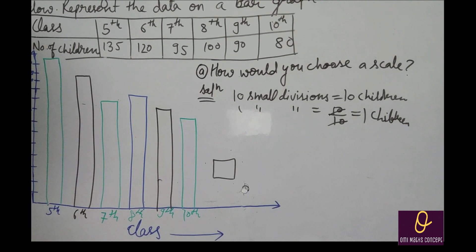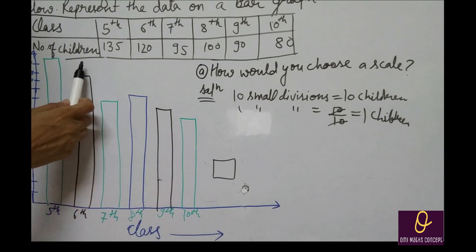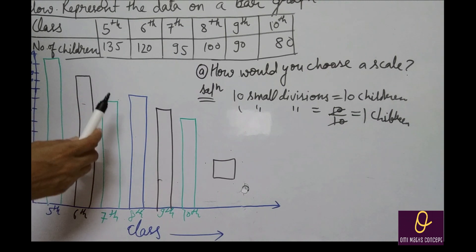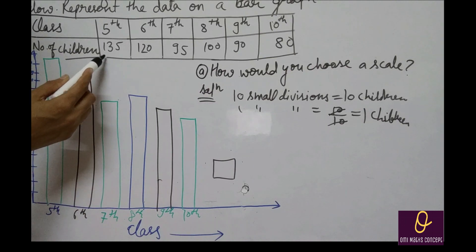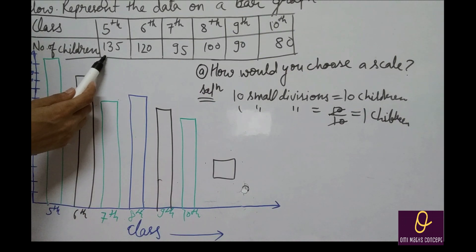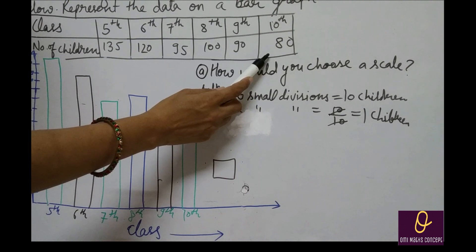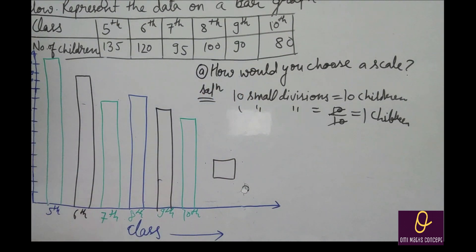Which class has the maximum number of children? यह आप easily बता पाओगे. Question note करेंगे, उसके बाद answer: 5th class has maximum number of children (135), and 10th class has minimum number of children, that is 80.